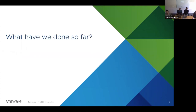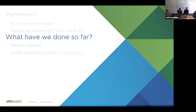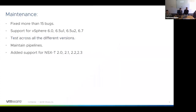So what have we done so far? We took over the CPI about a year ago from Pivotal. Working on the CPI involves two key areas: maintenance and adding features. For maintenance, we've fixed about 15 bugs. We have pipelines spanning vSphere versions from 5.5 all the way to 6.7. We test across all these different versions to make sure BOSH and CPI work correctly.